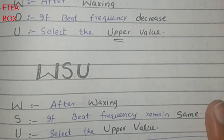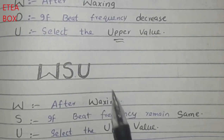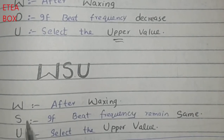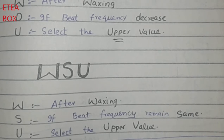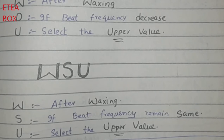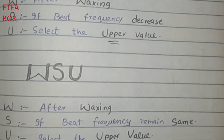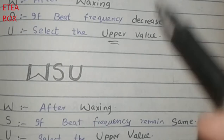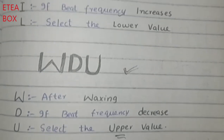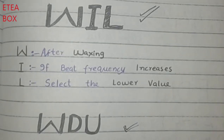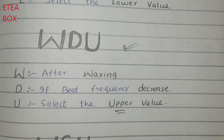The third rule is WSU. After waxing, if the beat frequency remains the same, then you have to select the upper value. So you have to apply these three short tricks: after waxing — WIL, WDU, and WSU.